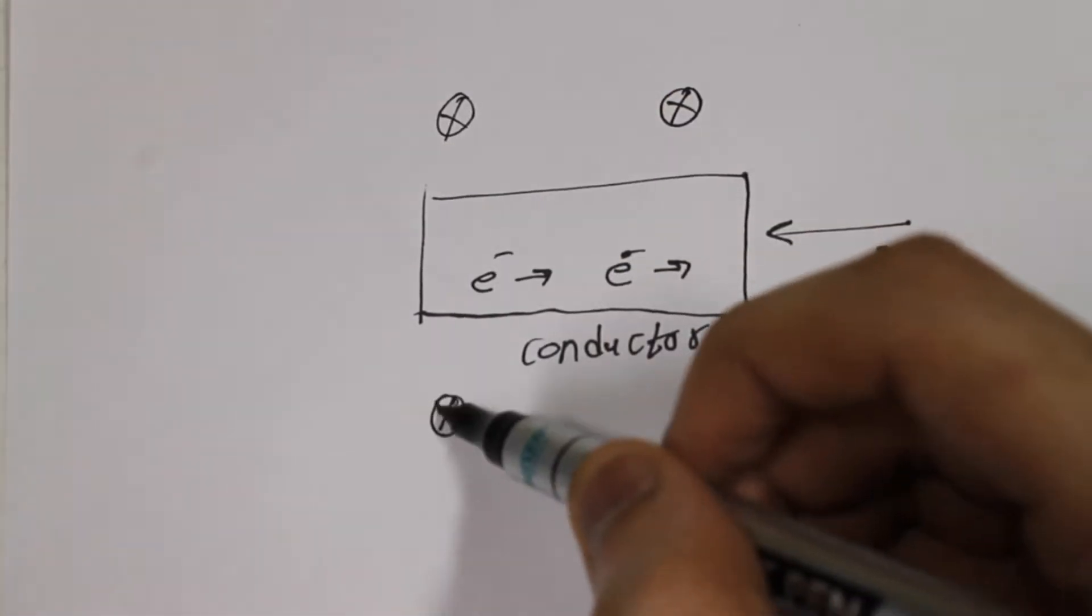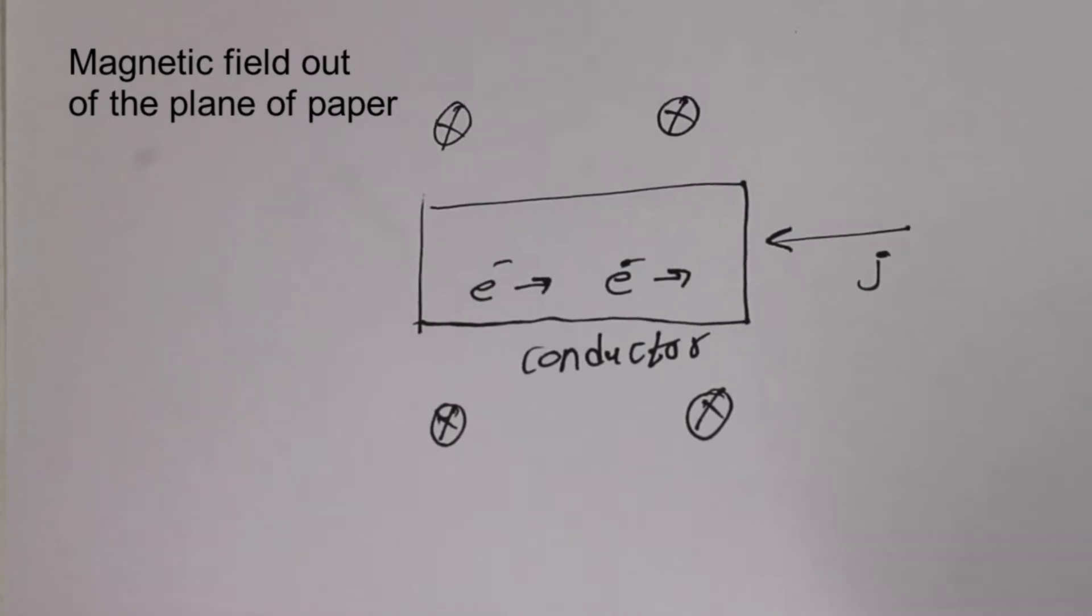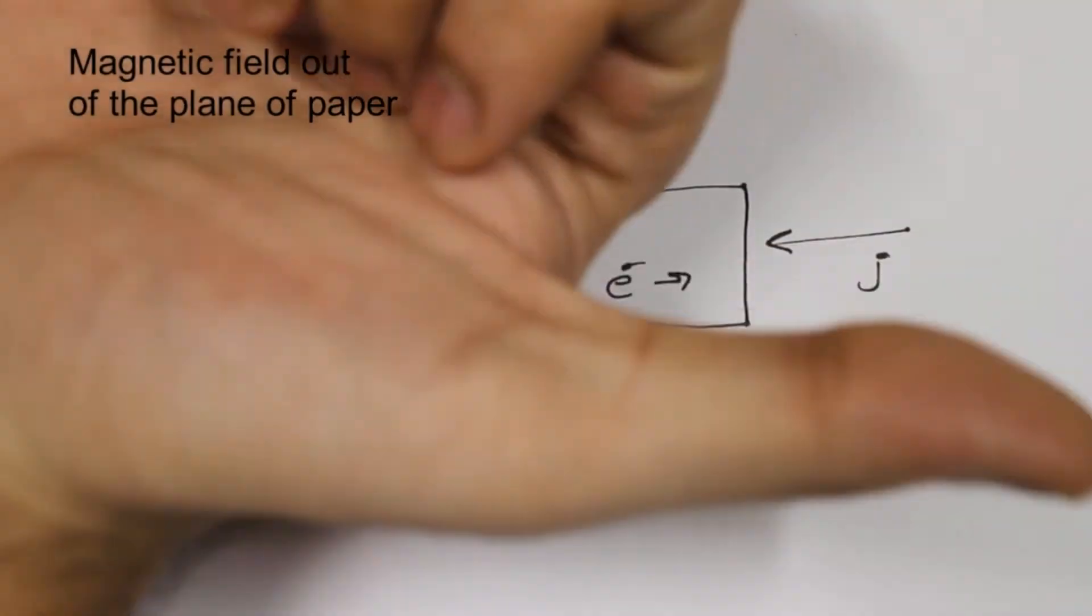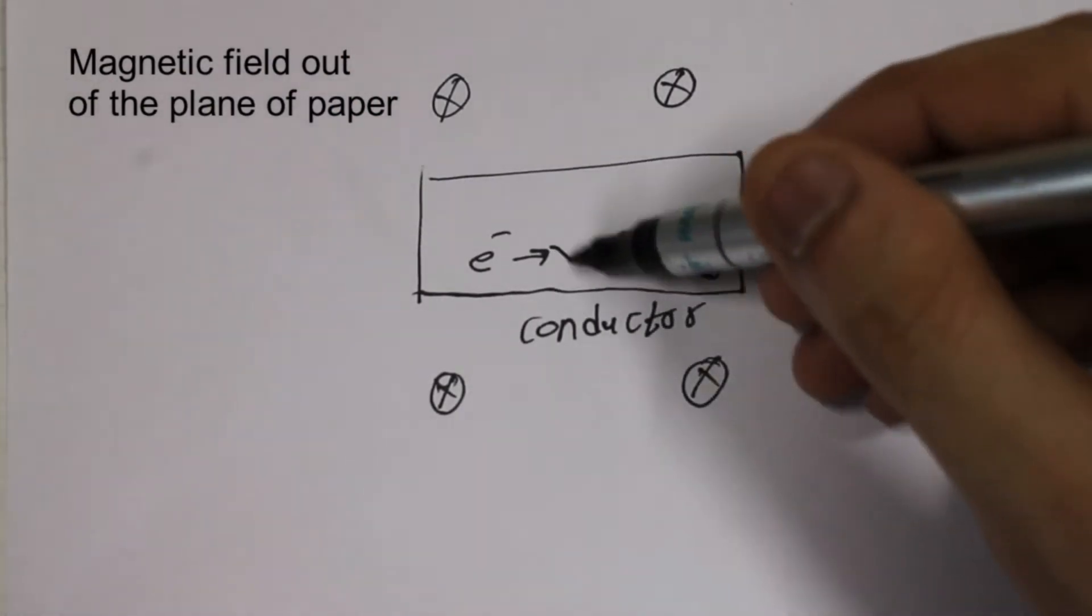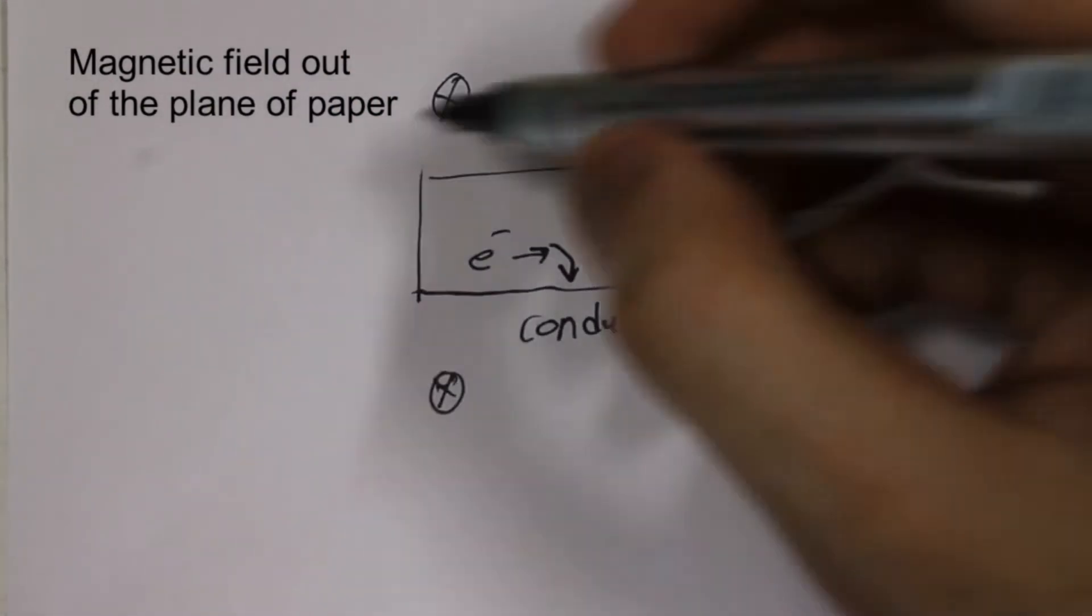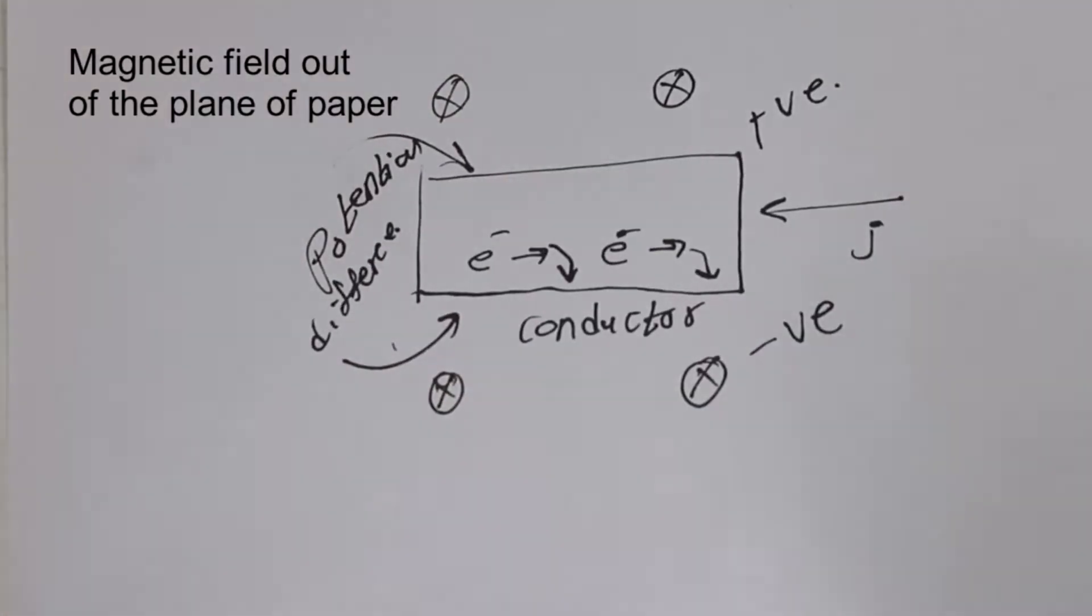If this conductor is placed in an external magnetic field, in this case coming out of the plane of paper, then the electrons would face an external force in the downward direction. This force would create an accumulation of charges, thus creating a potential difference across the conductor. This effect is known as the Hall Effect.